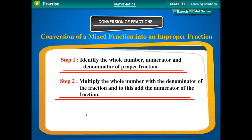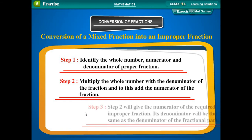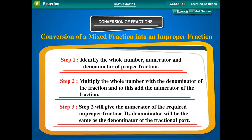Step 2: Multiply the whole number with the denominator of the fraction and add the numerator of the fraction to this product. Step 3: The result of Step 2 gives the numerator of the required improper fraction. Its denominator will be the same as the denominator of the fractional part.